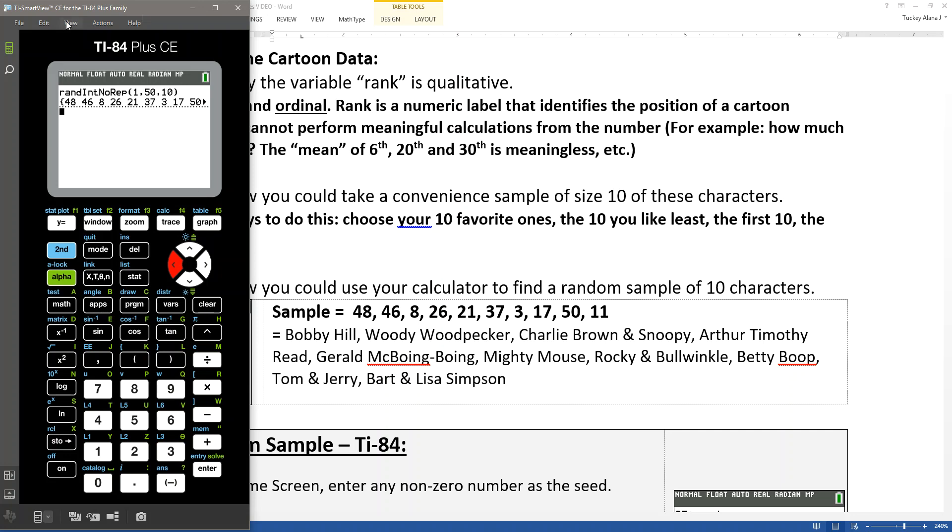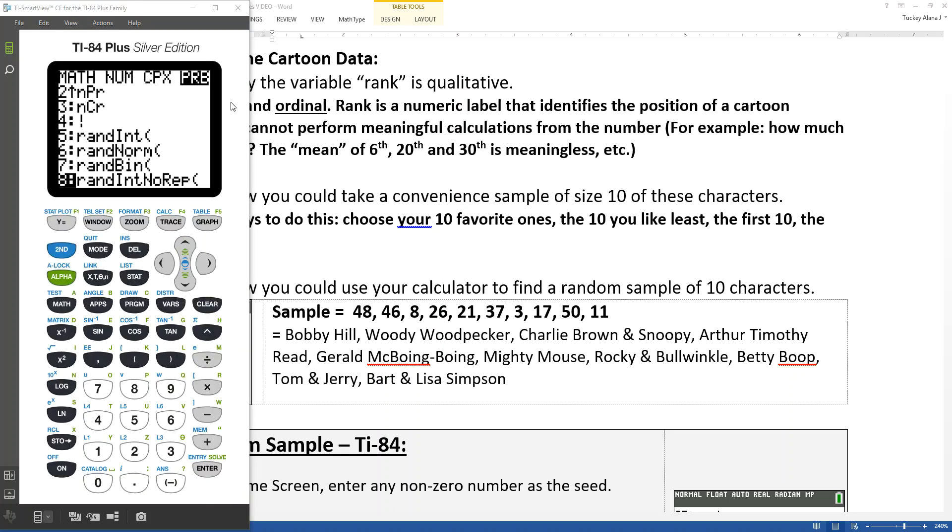Now let's show with the other calculator real quickly. And if you have a color calculator you can just kind of skip this next little bit. So I'm going to change my view one second. This is what an older calculator looks like. I pressed math and then I go over to PRB, which is the probability menu. And down at the bottom it should have RAND INT NO REPEAT. So I'm going to pick number 8.